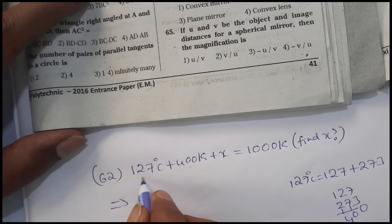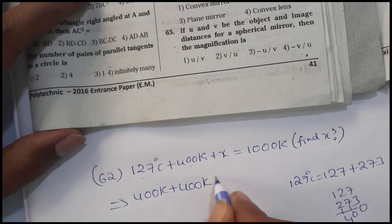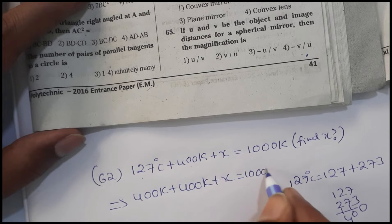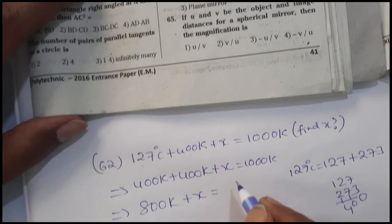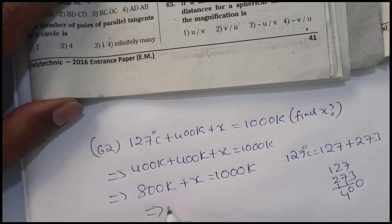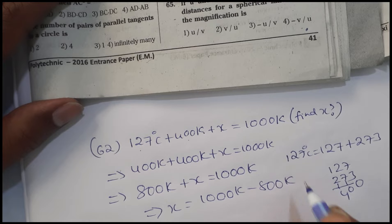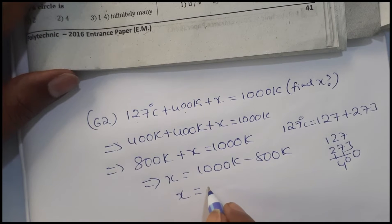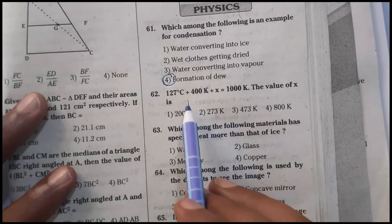This gives us: 400 Kelvin plus 400 Kelvin plus X equals 1000 Kelvin. So 800 Kelvin plus X equals 1000 Kelvin, which implies X equals 200 Kelvin.